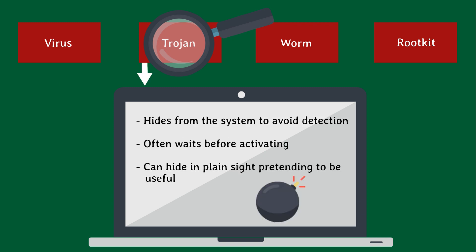Trojans are a little different. The primary characteristic about a Trojan is how it hides and evades detection. Trojans are often the malware you never knew was there. Many Trojans will wait for certain conditions or wait for a set amount of time before activating. Some Trojans hide in plain sight, disguised as an actual program pretending to be useful. So you think you downloaded a free program to help you out, but behind the scenes, the Trojan is going to work on your computer.